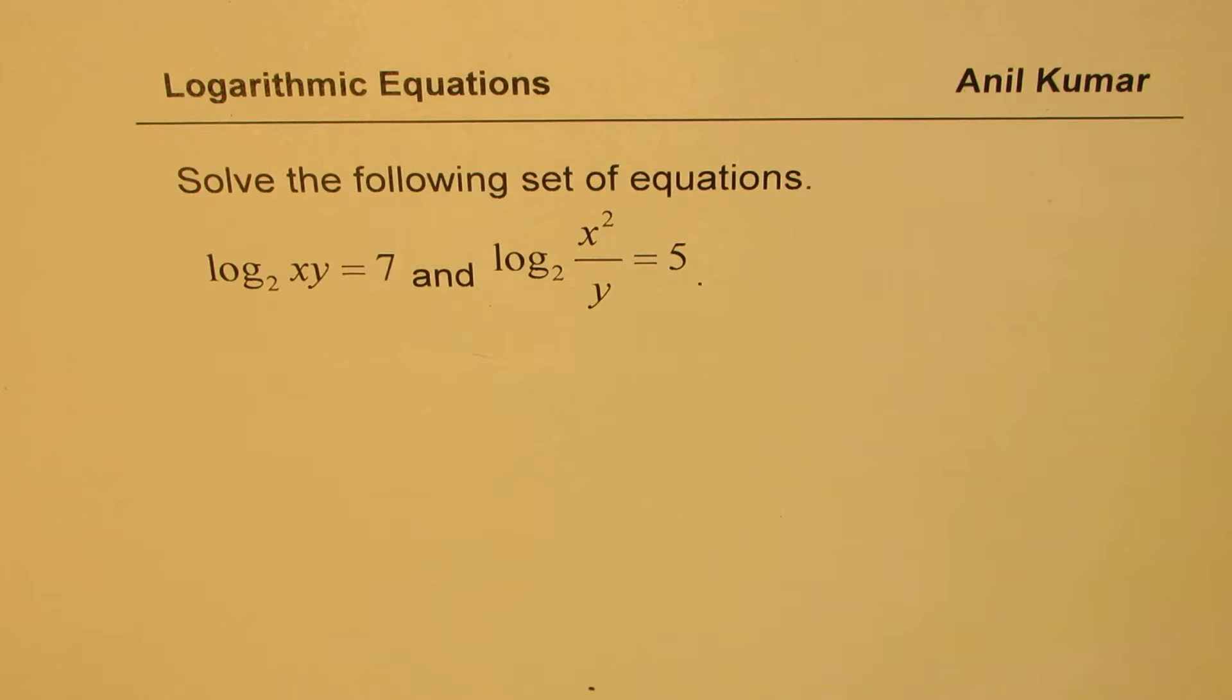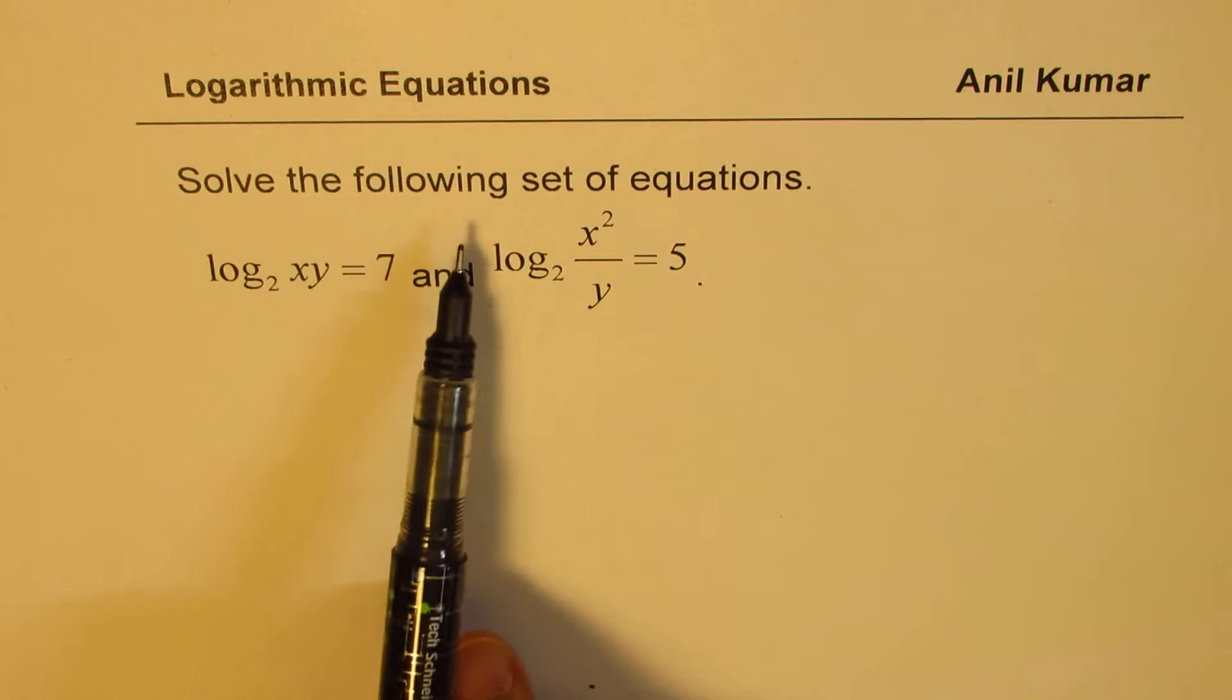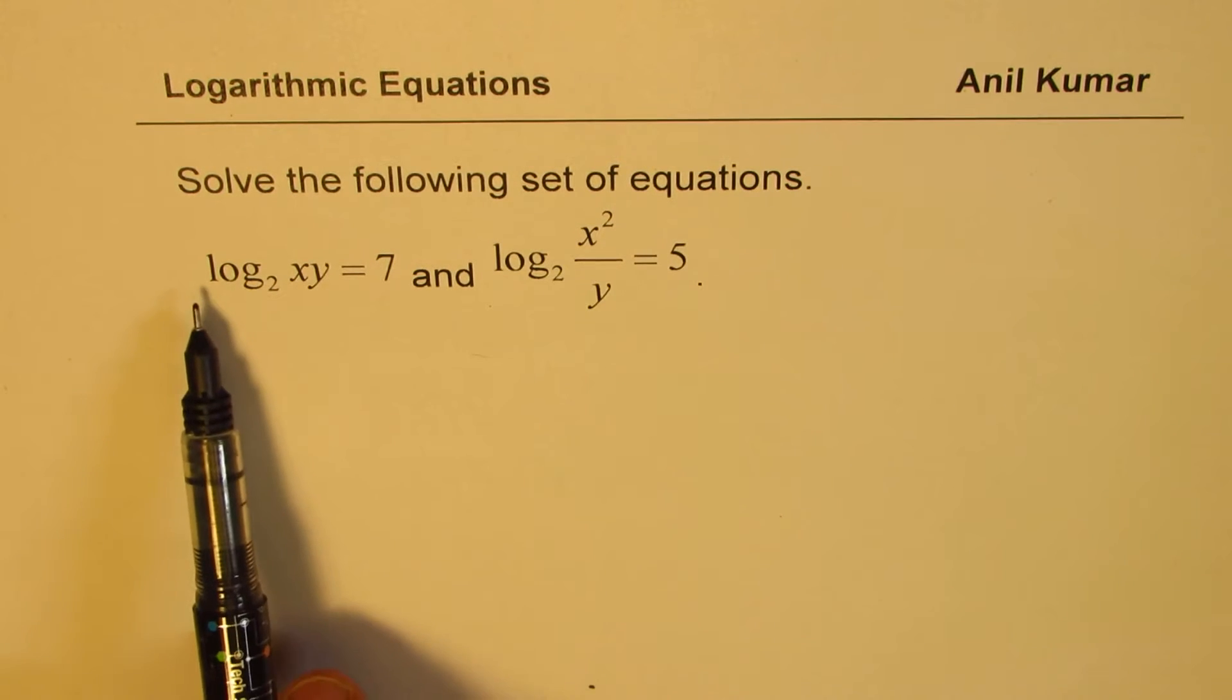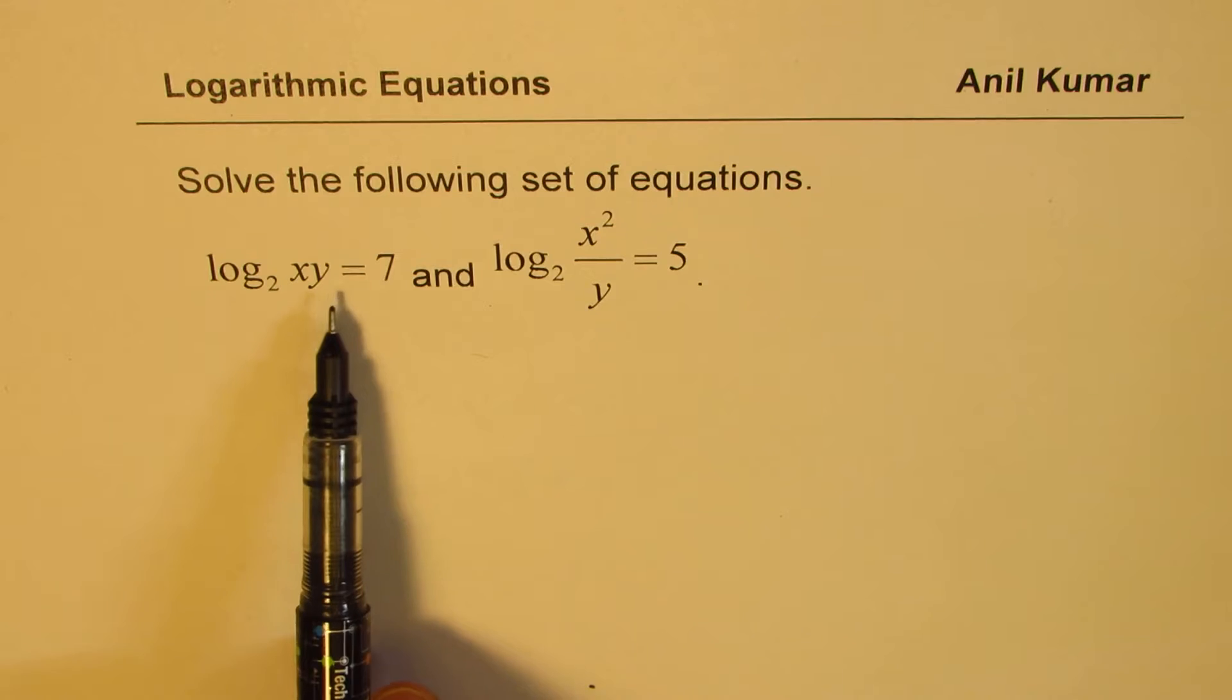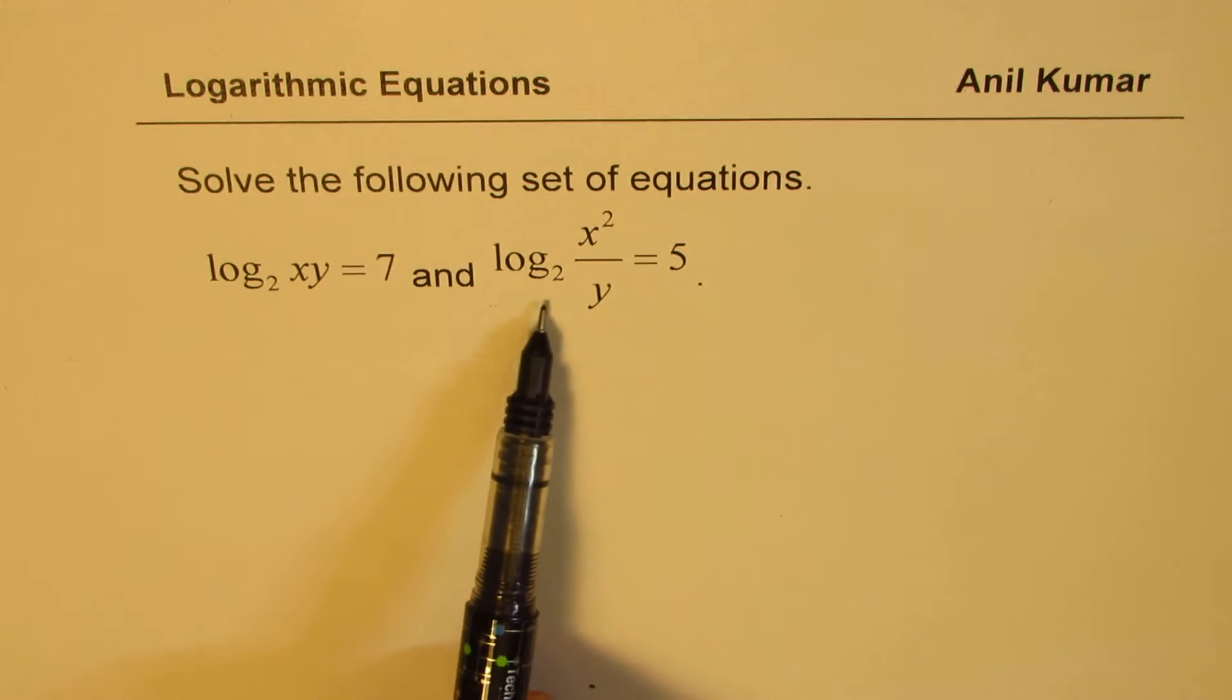Here is another question from one of our subscribers. We have simultaneous equations using logarithms this time. The question for you is to solve the following set of equations: log base 2 of xy equals 7, and log base 2 of x squared divided by y equals 5. We need to find the value of x and y.